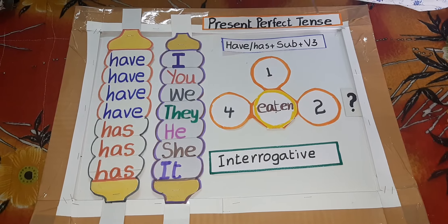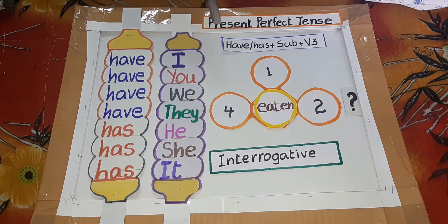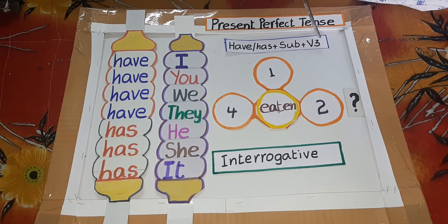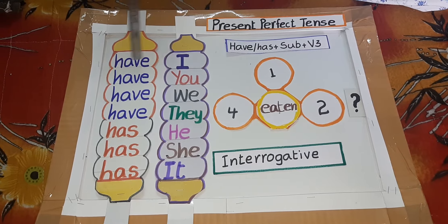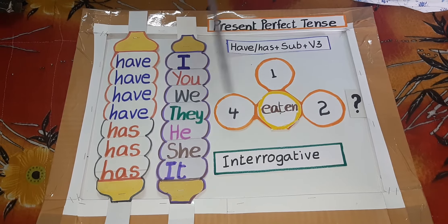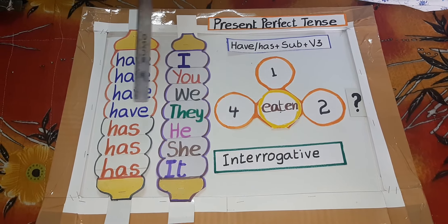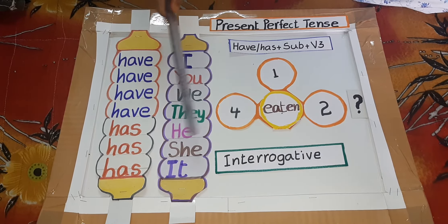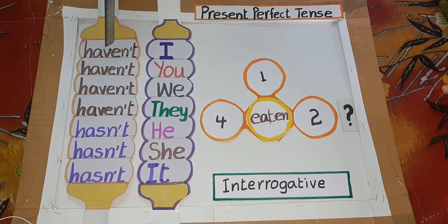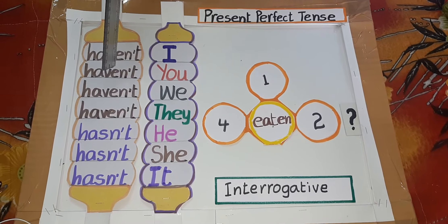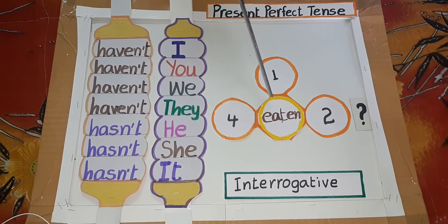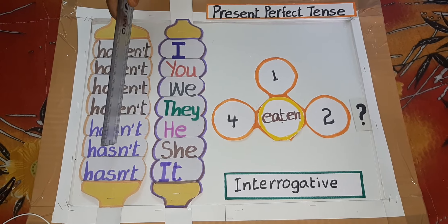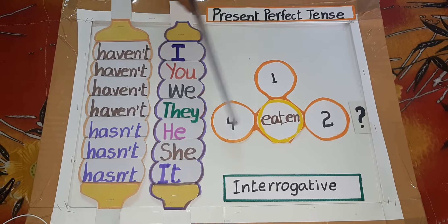Present Perfect Tense Interrogative Sentences: Have or has plus subject plus third form of verb. Have I eaten? Have you eaten? Have we eaten? Have they eaten? Has he eaten? Has she eaten? Has it eaten? Haven't I eaten? Haven't you eaten? Haven't we eaten? Haven't they eaten? Hasn't he eaten? Hasn't she eaten? Hasn't it eaten?